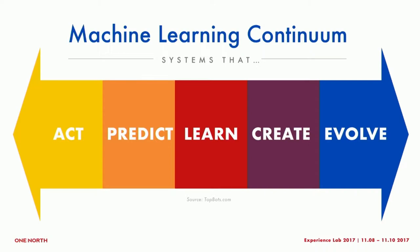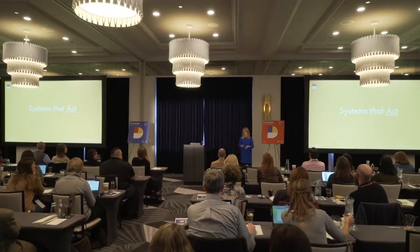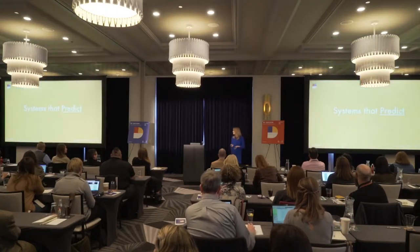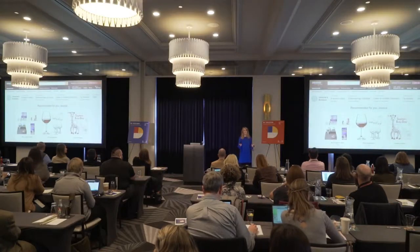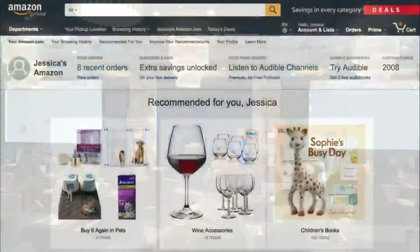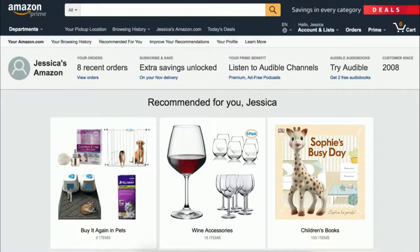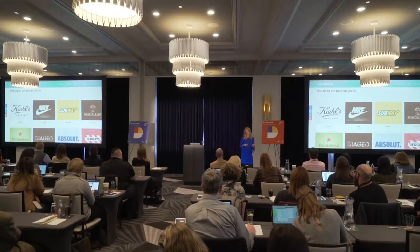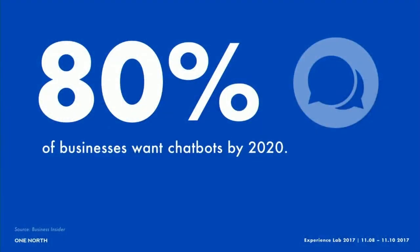Systems that act are rule-based machine learning programs — something like cruise control or the fire alarm in your house: if this happens, then that happens. Systems that predict are more interesting — this is my Amazon Prime page, what Amazon recommends for me based on my data. Then systems that learn — bots are a great example. These can get better as they get more data. Eighty percent of businesses surveyed say they want chatbots by the year 2020. That's pretty significant.